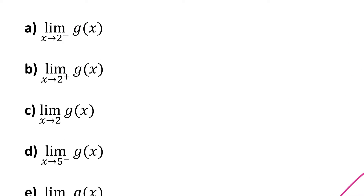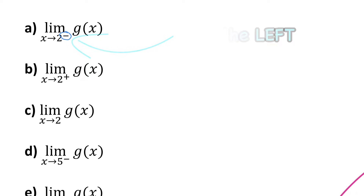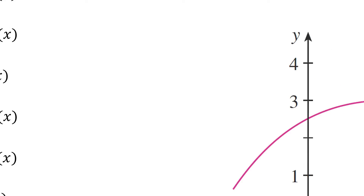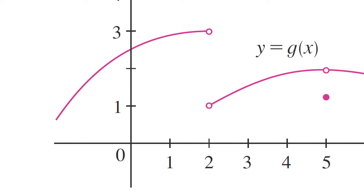Parts A and B are asking us to find the left and right-hand limits as x approaches 2. Part A specifically wants us to find the limit of g(x) as x approaches 2 from the left side. That little minus sign means from the left side of 2. So let's go to our graph, and I'm going to draw a vertical line through x=2 so I have a visualization of what the function is approaching.